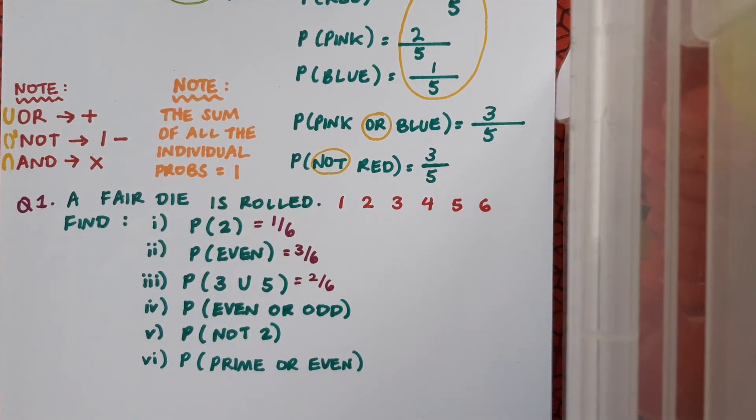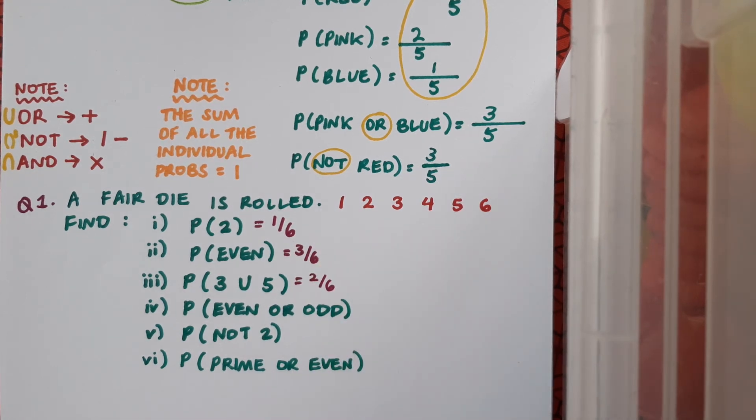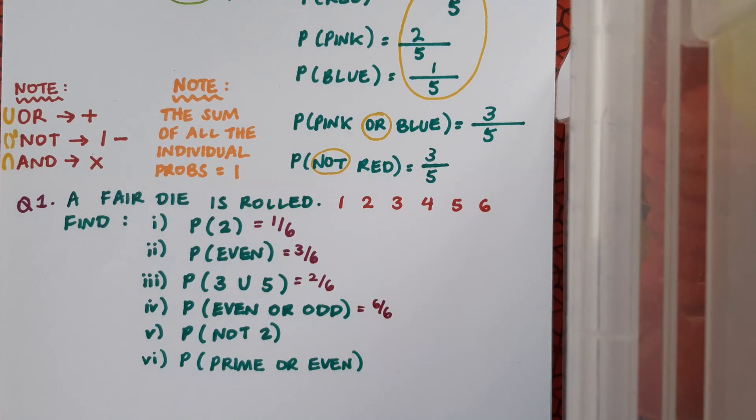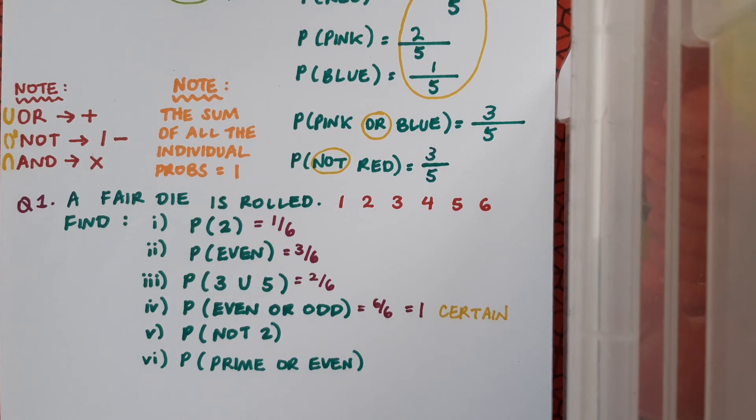The probability of even or odd is the probability of an even result plus the probability of an odd result, and we can see up here in our list that that actually covers all of our different eventualities. We can write this as six over six or one. A probability of one indicates that something is certain to happen. If I roll that die, I'm definitely going to get an even number or an odd number.